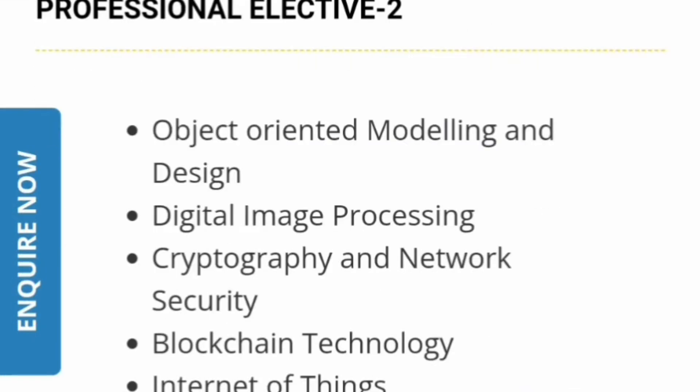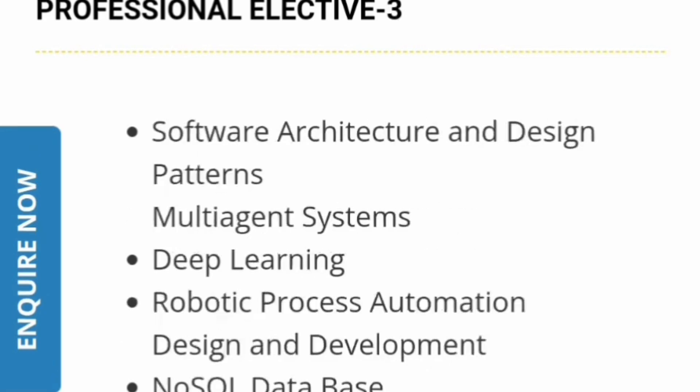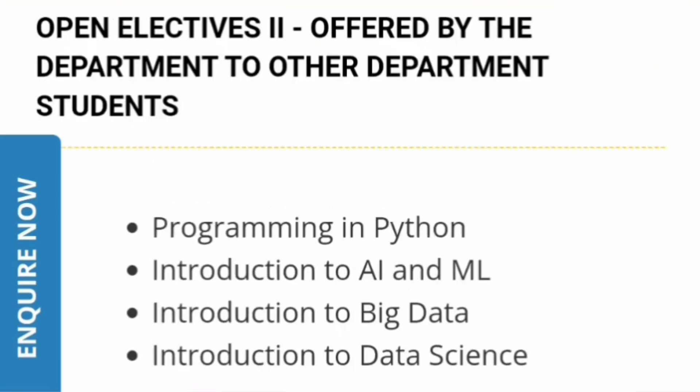Under professional elective two, you can select subjects like object-oriented modeling, digital image processing, cryptography, network security, blockchain, or internet of things — based on your interest. Under professional elective three, subjects include software architecture and design, deep learning, robotic process automation (RPA), and NoSQL databases. Under open elective two, programs are offered from other departments like programming in Python, AIML, big data, and data science.